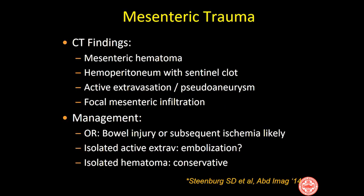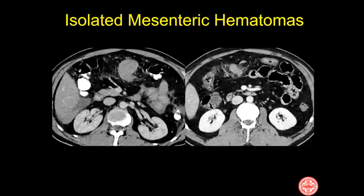Moving on to mesenteric trauma, the findings on CT include a focal mesenteric hematoma, hemoperitoneum with or without a sentinel clot, active extravasation of contrast or changes in vessel caliber such as pseudoaneurysms, and most commonly focal mesenteric infiltration with blood. Management depends on whether there is likely an associated bowel injury or ischemia secondary to the injured mesenteric vessel.